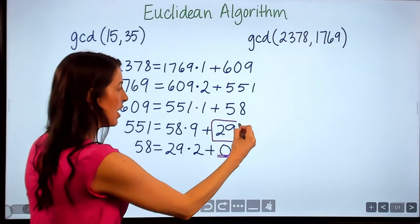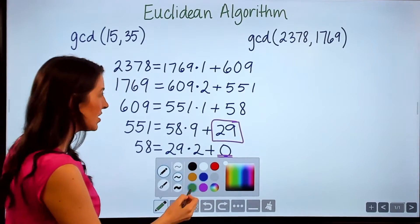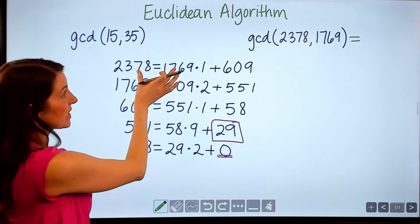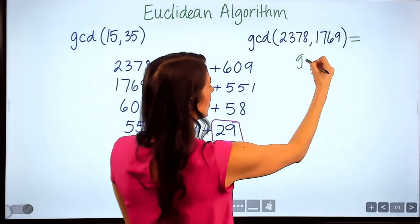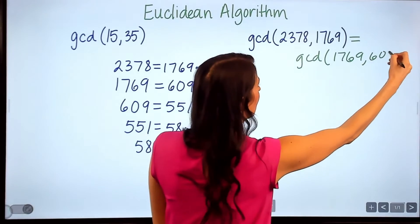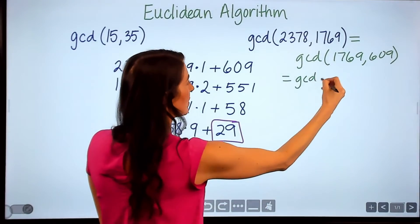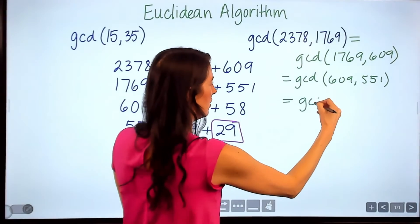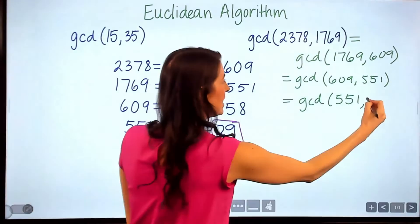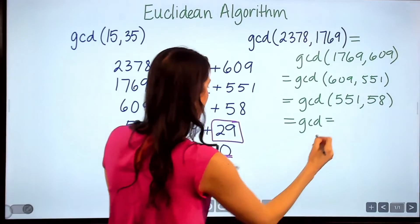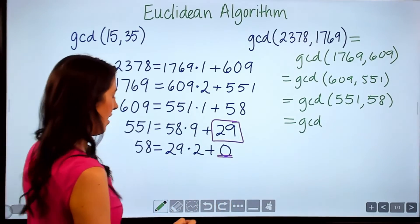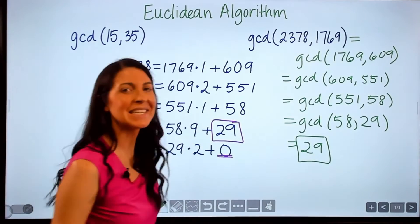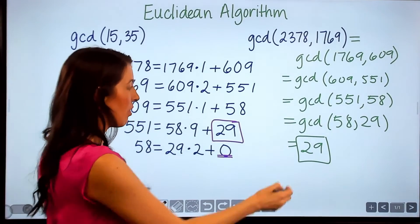So our greatest common divisor is the remainder from the previous step. What we've essentially done is written this as a chain: the GCD of 2378 and 1769 equals the GCD of 1769 and 609, which equals the GCD of 609 and 551, which equals the GCD of 551 and 58, and finally equals the GCD of 58 and 29, which is 29.